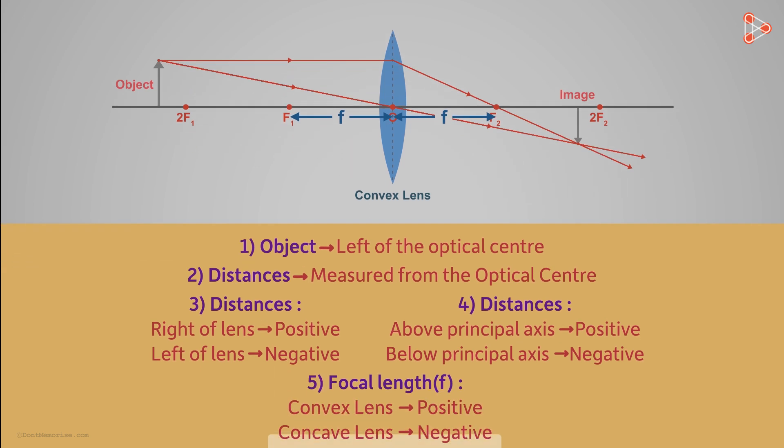Which is why there is a fifth rule that tells us the sign convention for the focal length of a lens. For a convex lens, focal length is considered to be positive and it is considered to be negative for a concave lens.